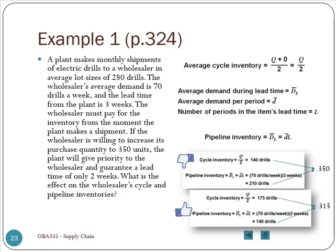Now compare this to a different ordering policy. Here, this company is considering another ordering quantity, which is 350. Will this cause them to have more inventory or less? Let's see. If they order 350 units every time, the cycle inventory will increase from 140 to 175. 175 is half of the new order size, 350.